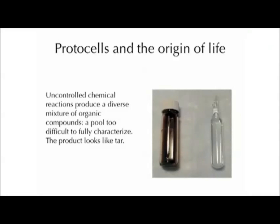Certainly there were molecules present on the early Earth, but they wouldn't have been these pure compounds that we worked with in the lab. Rather, they'd be a really complex mixture of all kinds of stuff, because uncontrolled chemical reactions produce a diverse mixture of organic compounds — think of it like a primordial ooze. It's a pool that's too difficult to fully characterize even by modern methods, and the product looks brown like tar.